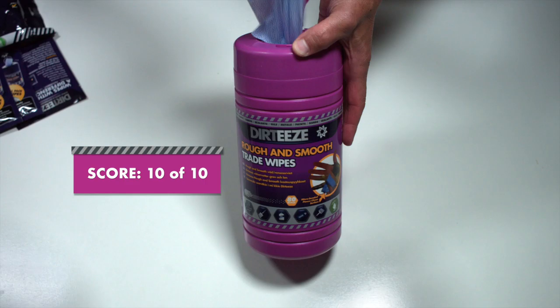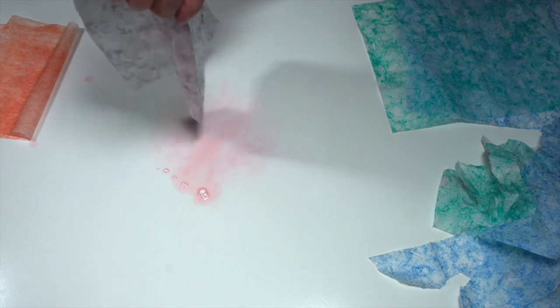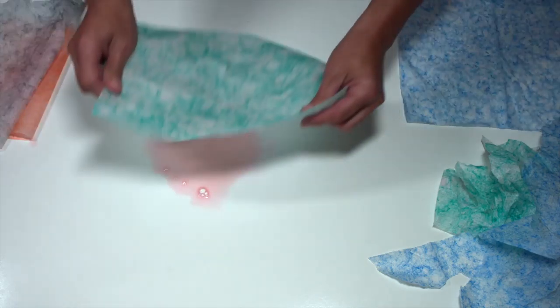Next we will be taking each scrubbing wipe and we'll drop it on two ounces of colored water. We will drop the wiper on the liquid and see how fast and how much of it wicks up.